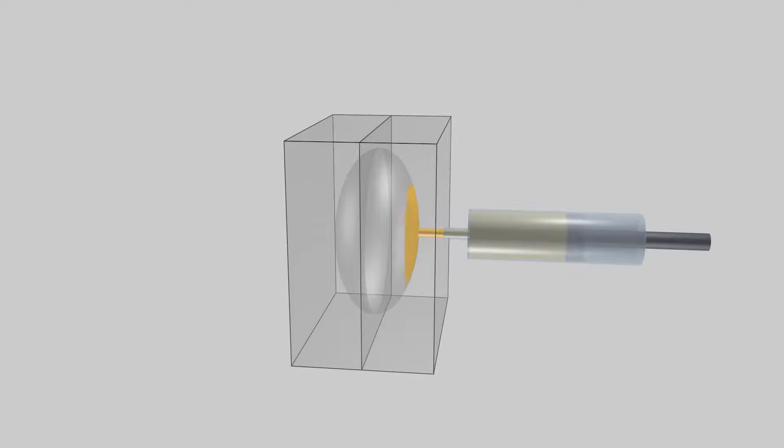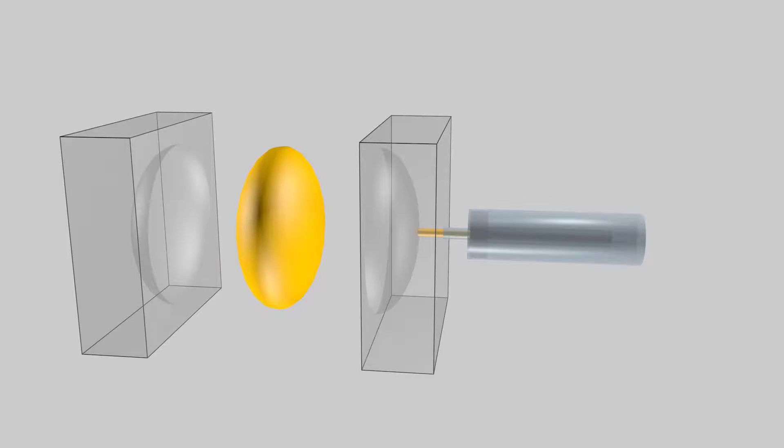In principle, injection molding is simple. Melt plastic, inject it into a mold, let it cool, and then out pops a plastic product. In reality, injection molding is an intricate and complex process.